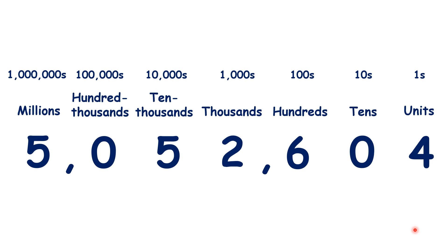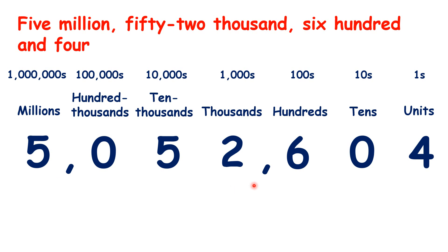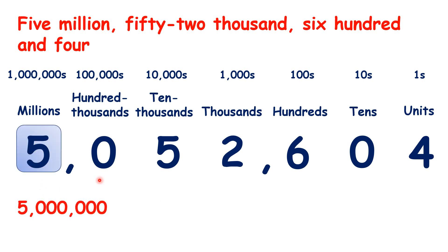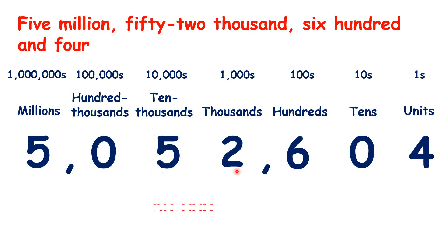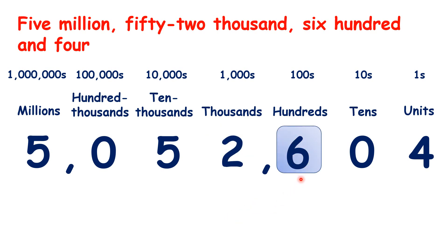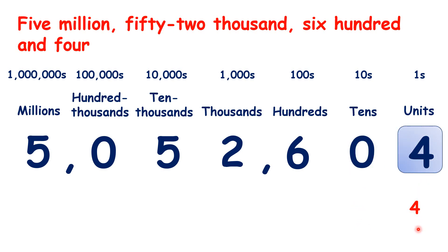How do we say this number? We say 5,052,604. This 5 stands for 5,000,000. This 0 stands for 0. This 5 stands for 50,000. This 2 stands for 2,000. This 6 for 600. This 0 for 0. And this 4 for 4.